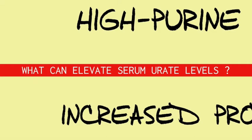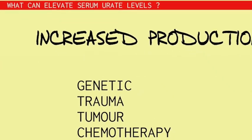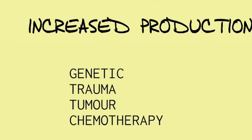The other thing that can elevate serum urate from the synthetic side is increased production through metabolism, and this can be a genetic anomaly. Trauma — both accidental and surgical — tumour and chemotherapy all have the common factor of increased tissue destruction and tissue turnover, and as a result, increased metabolism of purines and thus increased synthesis of uric acid.